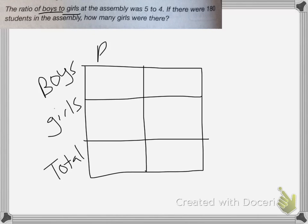We still have the ratio in the first column and the actual count in my second column. It says the ratio is 5 to 4, so I'm going to put the 5 in the boys, 4 girls, and then my total is going to be 5 plus 4, which is equal to 9.